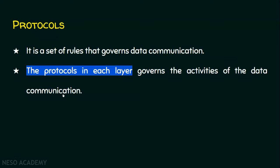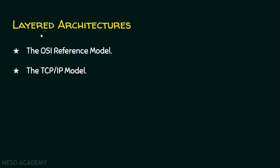Now we will see what layered architectures are available. We are going to focus on two layered architectures in this series. Number one, the OSI reference model. And number two, the TCP/IP model. We will see the OSI reference model now.